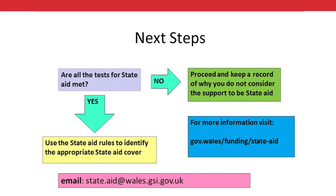So, what are the next steps you should take? With your project, are all five conditions met for state aid to be present? If no, then proceed — but be sure to keep a record of why you do not consider it to be state aid, should the Commission decide to investigate. If yes, then use the state aid rules to identify the appropriate cover. You can find more information at the link on the screen, or contact the State Aid Unit at state.aid@wales.gsi.gov.uk for more information.